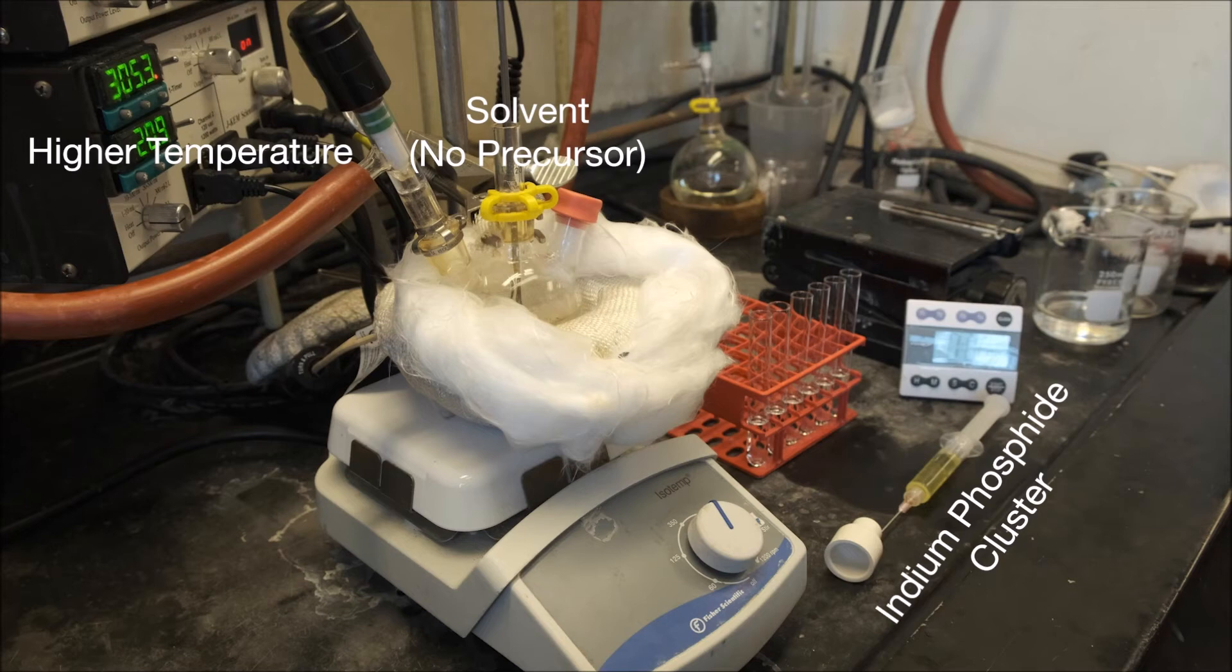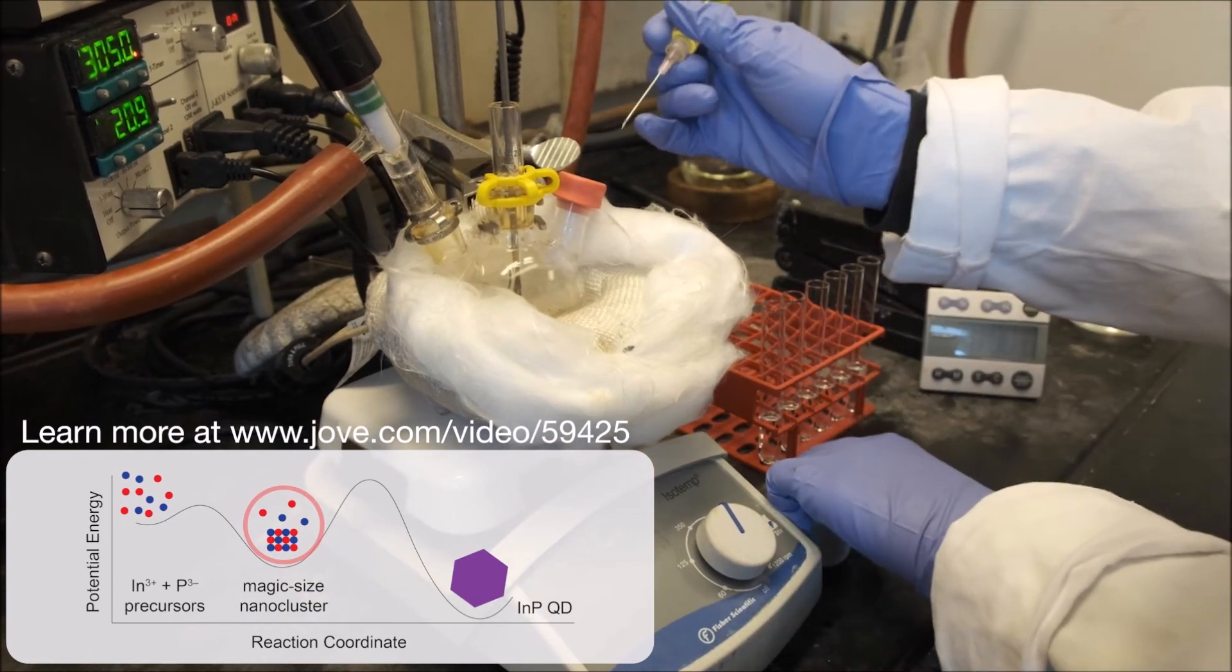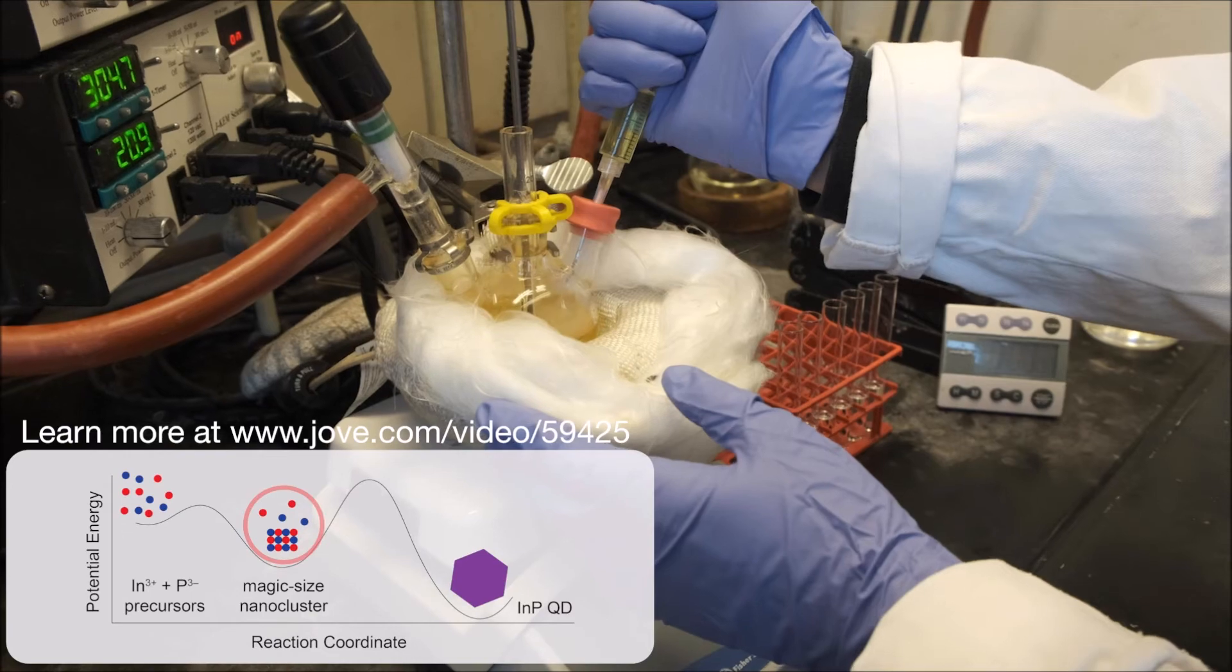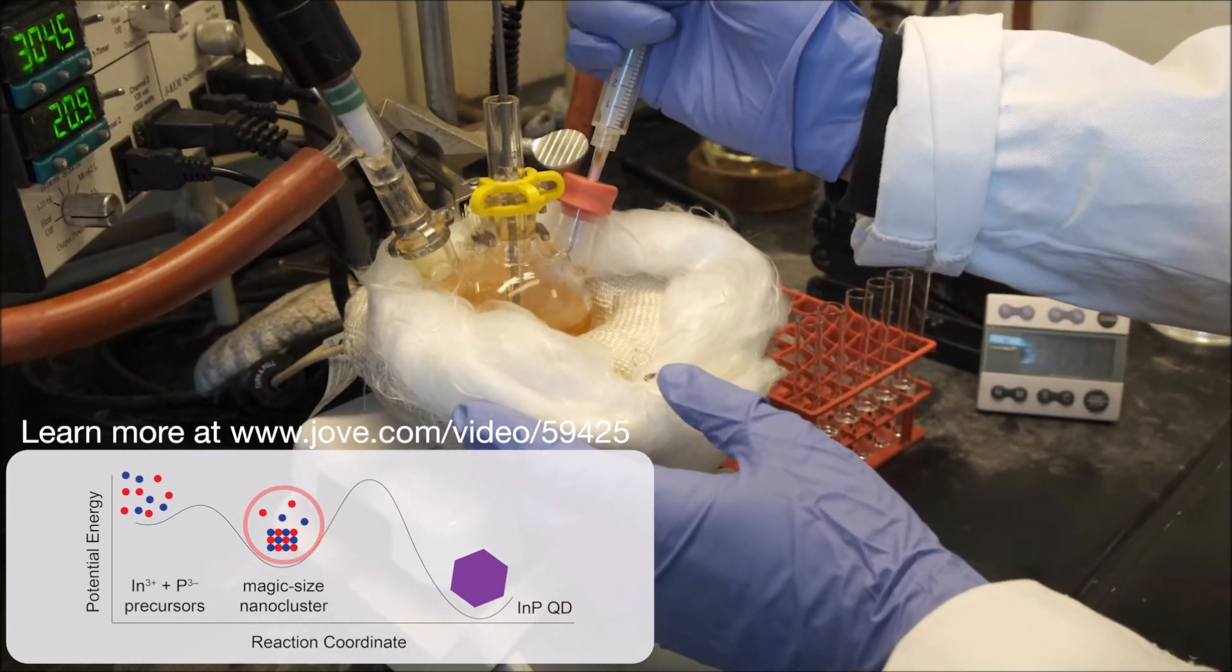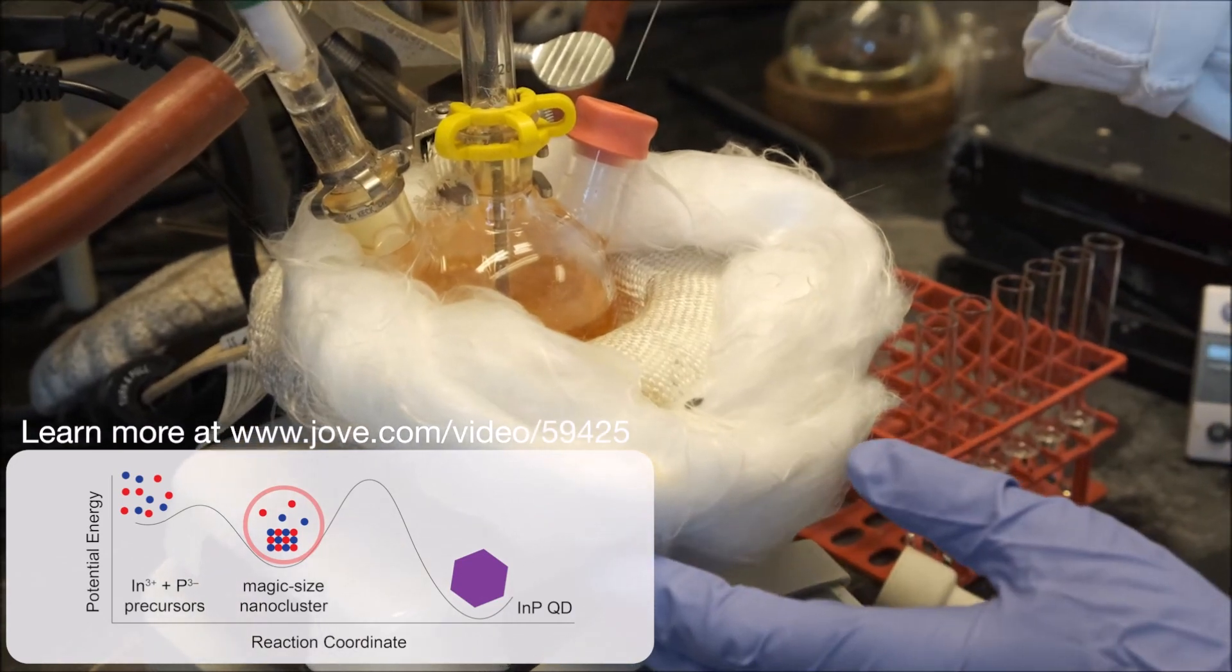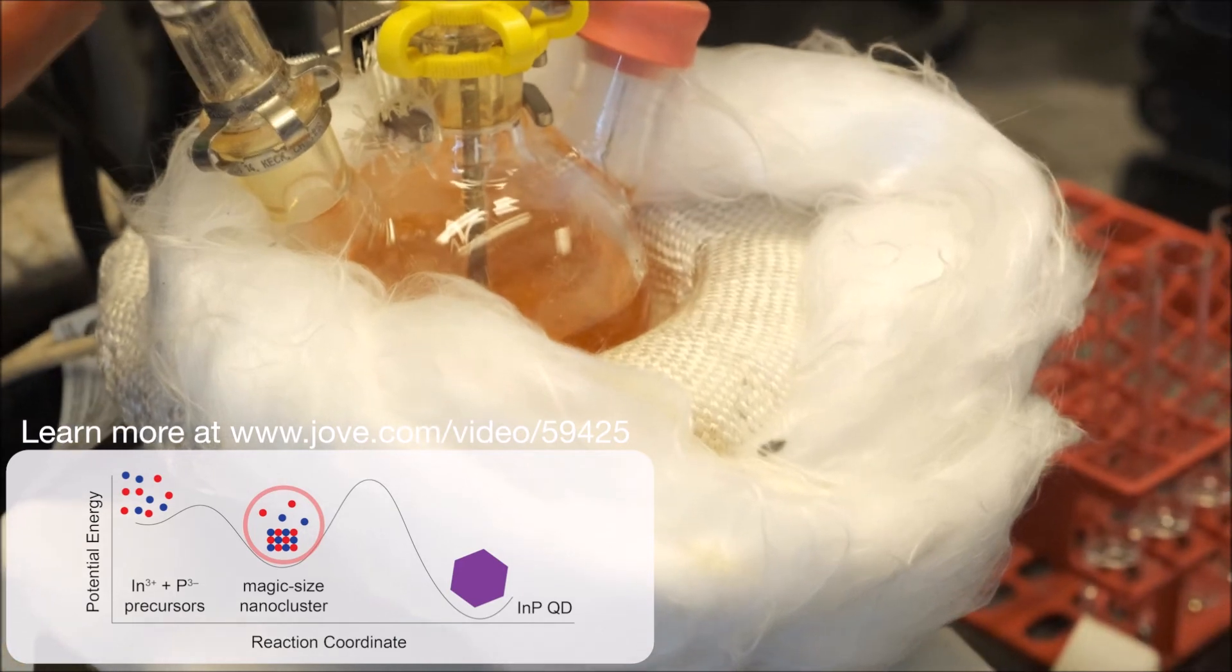The indium phosphide cluster is a single source precursor in this reaction, which means these clusters have all the reactants required for the formation of the quantum dots built in. The indium phosphide cluster is a stable intermediate that we can isolate from the synthesis of molecular indium and phosphorus precursors at a lower temperature of 120 degrees Celsius.